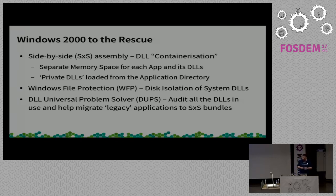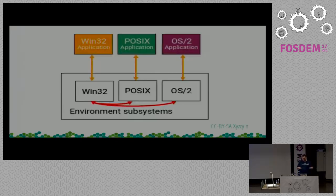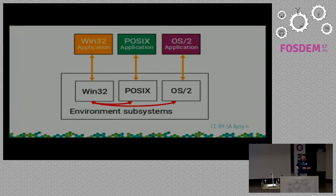You didn't even have to do it necessarily with a Win32 application. They had runtimes in there for POSIX, runtimes for OS/2. I don't know anyone who ever really used them in anger, but they were there. This is the Windows 2000 diagram.